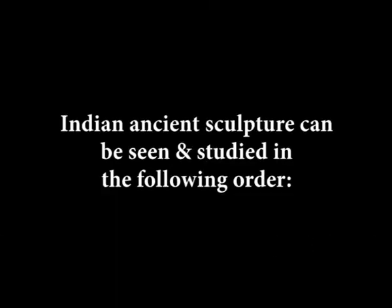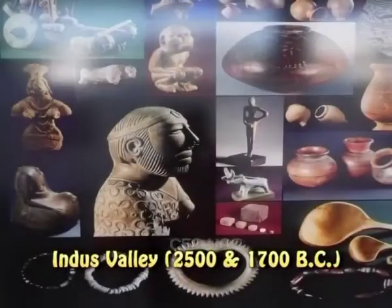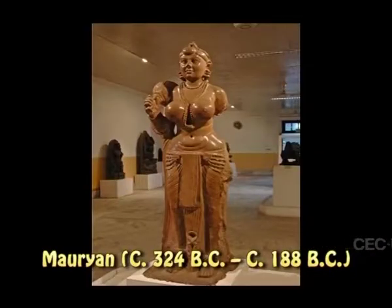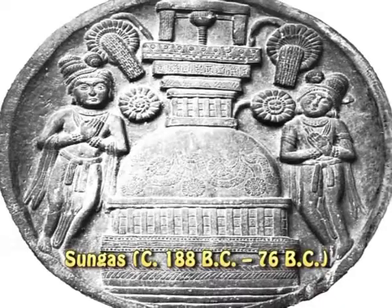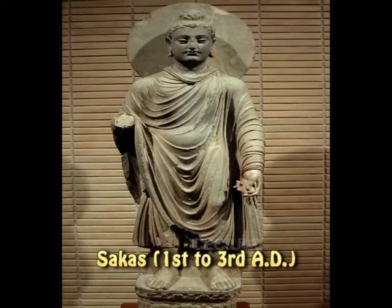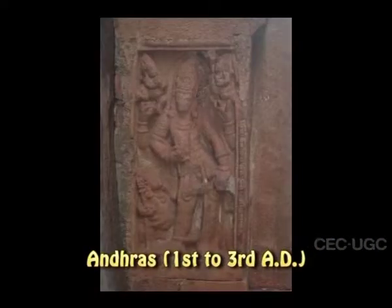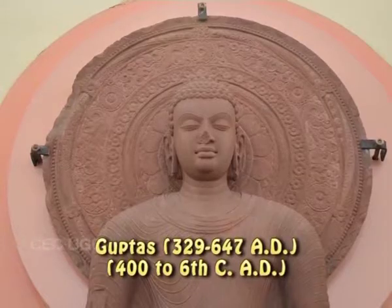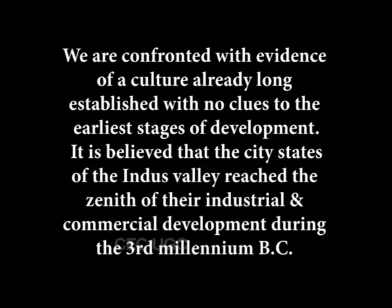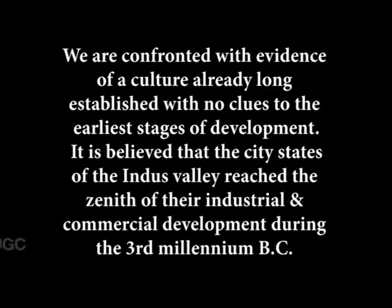Ancient sculpture can be seen and studied in the following order: Indus Valley civilization, Mauryans, Shungas, Kushanas, Shakas, Andhras, and Guptas. The most interesting fact about the discoveries of the Indus Valley civilization and its culture is that we are confronted with evidence of a culture already long established, with no clues to the earlier stages of development.